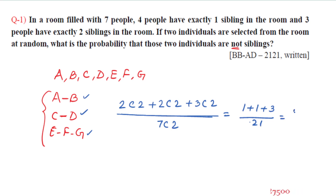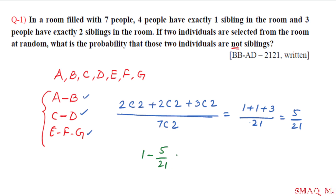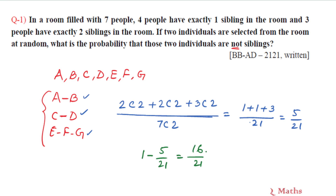So it is 1 plus 1 plus 3 equals 5, giving us 5 by 21. That is the probability of selecting two individuals who are siblings. So if the total probability is 1, then the probability of not being siblings is 1 minus 5 by 21, which equals 16 by 21.